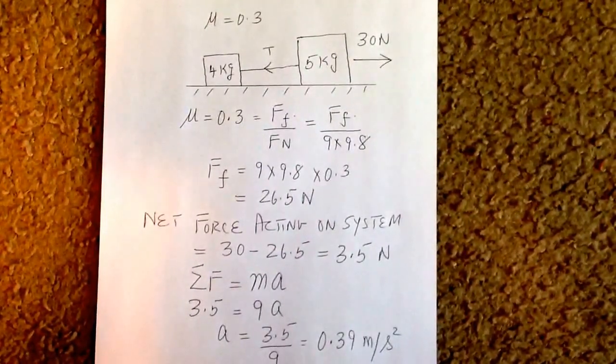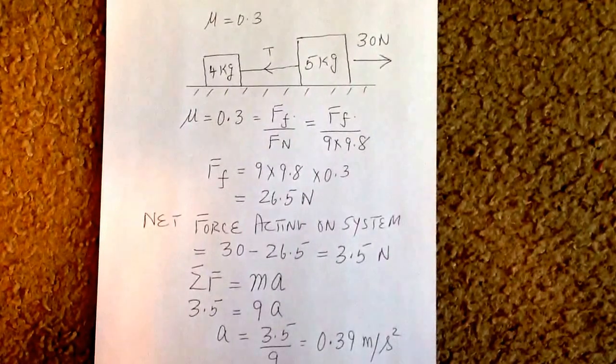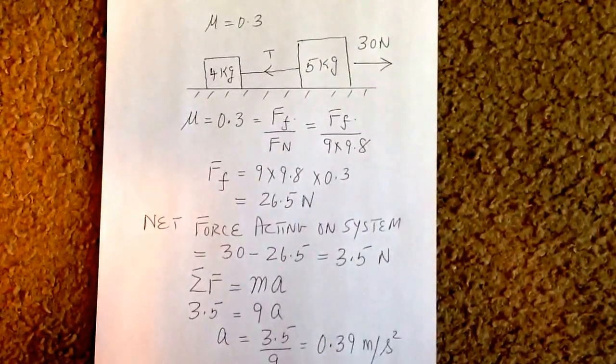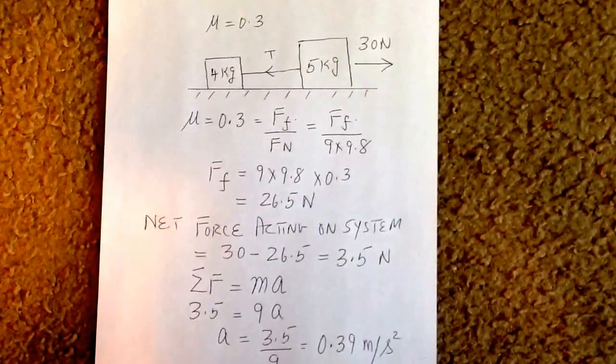So the force in the downward direction is 4 plus 5 or 9 kilograms times the acceleration due to gravity, which is 9.8.